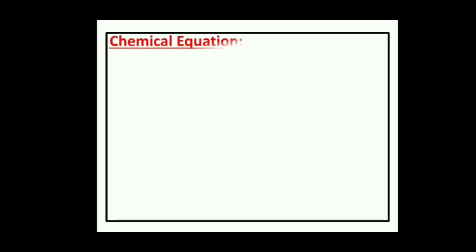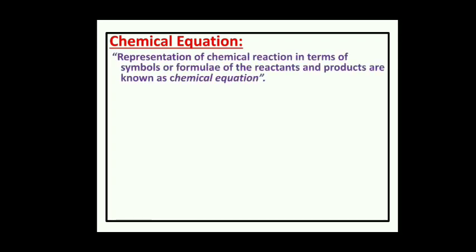What is a chemical equation? The process of chemical change can be represented with a chemical equation. Chemical change can also be represented in word form, but that is lengthy and difficult to understand. That's why we represent it in equation form. The representation of a chemical reaction in terms of symbols or formulae of the reactants and products is known as a chemical equation.